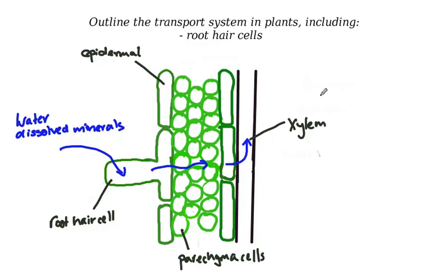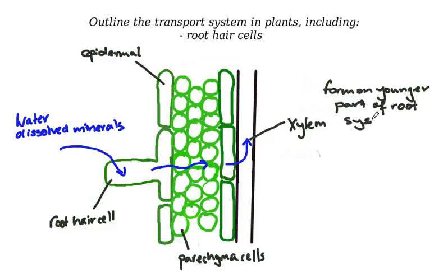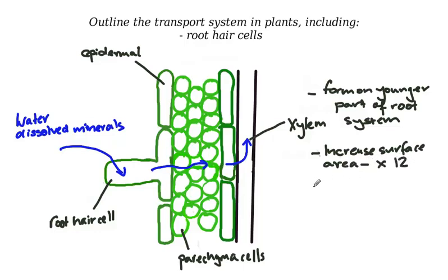Root hair cells form the younger parts of the root system, around the root tips. They increase the surface area by up to about 12 times. By increasing the surface area they are able to maximise the amount of water and minerals drawn in from the soil.